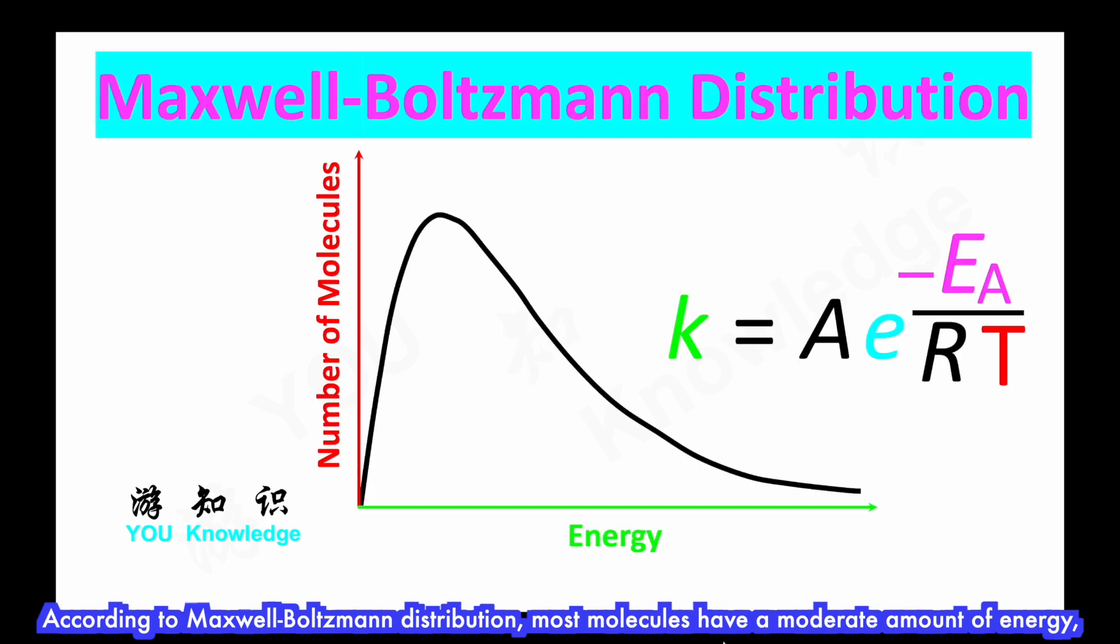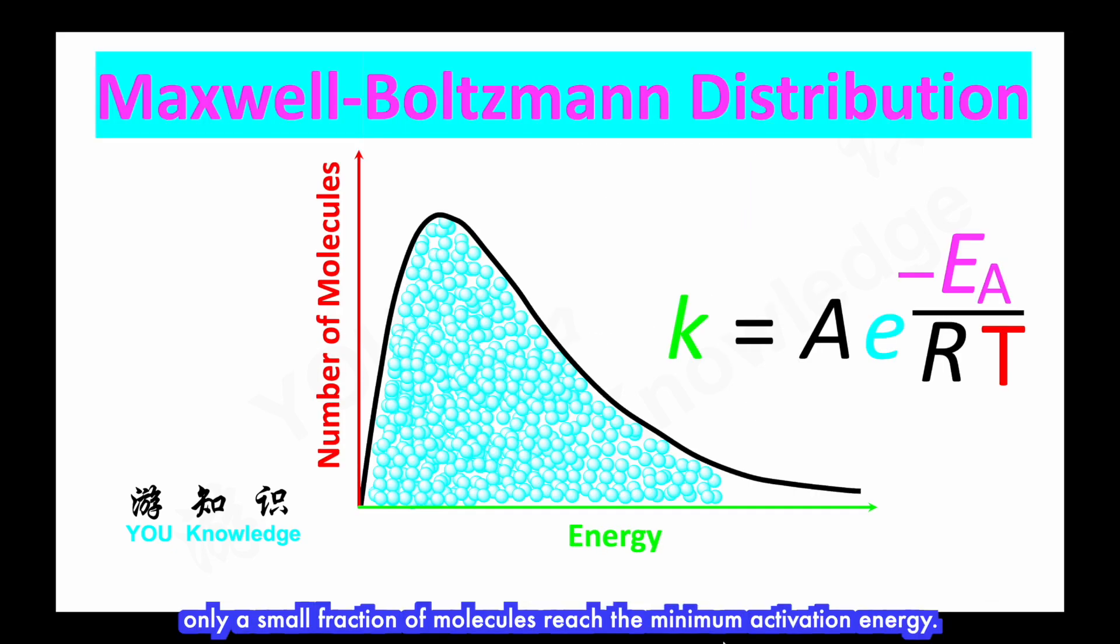According to Maxwell-Boltzmann distribution, most molecules have a moderate amount of energy, only a small fraction of molecules reach the minimum activation energy.